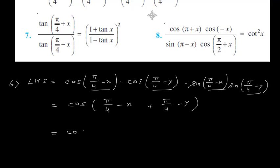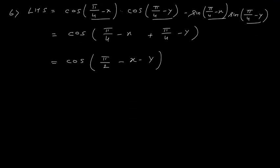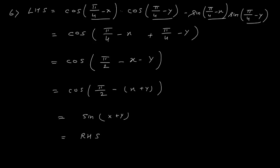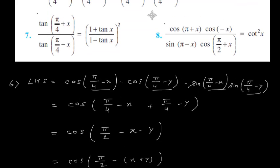So this equals cos of (pi upon 4 minus x) plus (pi upon 4 minus y), which is cos(pi upon 4 plus pi upon 4 minus x minus y), that is cos(pi upon 2 minus x minus y), which is cos(pi upon 2 minus (x plus y)). Now cos(90 minus theta) is sin theta, so this becomes sin(x plus y), which is your RHS.